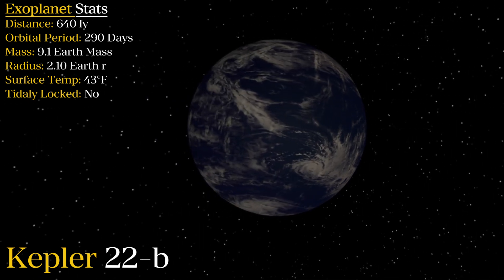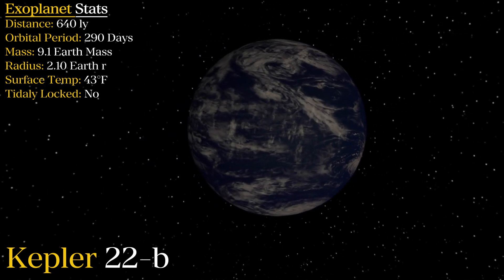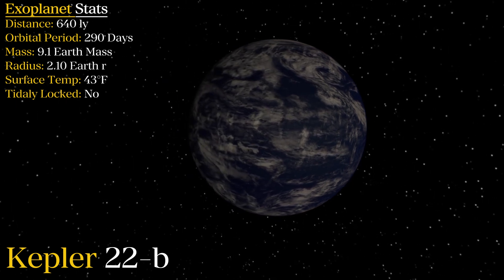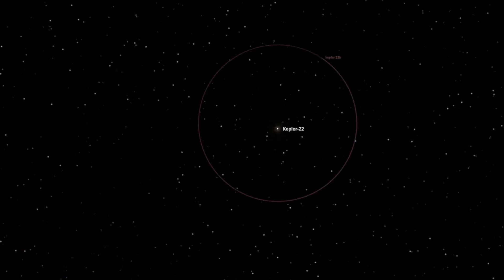This exoplanet does have a few positives going for it. And they are that it has a temperature very similar if not a little higher than Earth's. It also has a longer orbital period than other bodies in this list being 290 days.